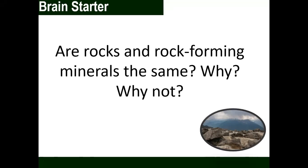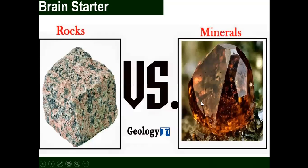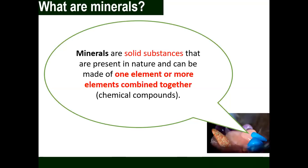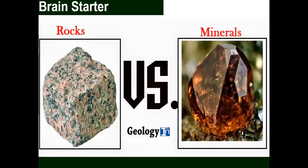Both answers are acceptable since I'm asking your opinion, but let us have the scientific way of differentiating the two. When we say rocks, these are aggregations of solid substances like minerals, which means for a rock to form there must be many minerals. For rock-forming minerals, minerals are defined as inorganic solids coming from non-living things, present in nature, and can be made of one element or more elements combined through chemical bonding. In terms of composition, rocks and minerals are not the same.